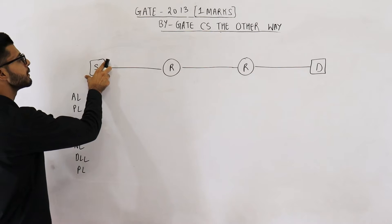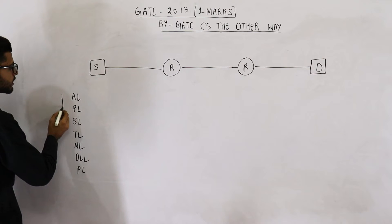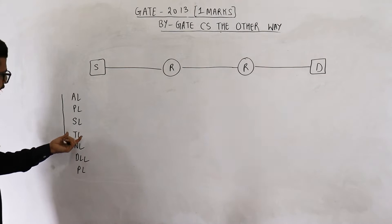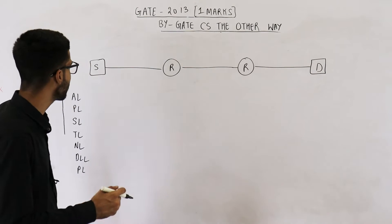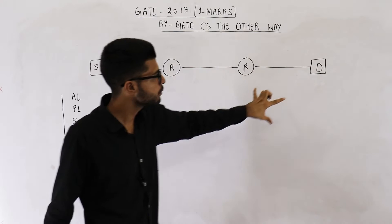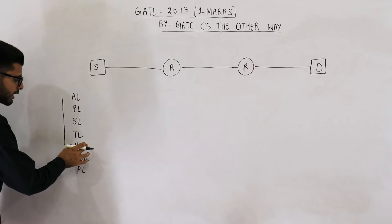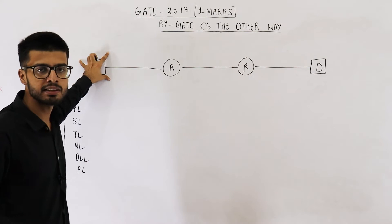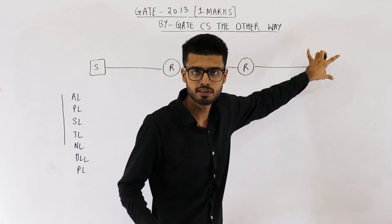A message will be prepared by the application layer of S. The message is prepared and given to lower layers. Presentation layer gets the message and passes it to session layer, then session layer gives it to transport layer. Transport layer converts that message into a segment by adding a transport layer header. Two important things in that header are the port number of source and port number of destination. Then this segment is given to network layer, which prepares a packet by adding the IP header. Two important things in that header are the IP address of the source and IP address of the destination machine.